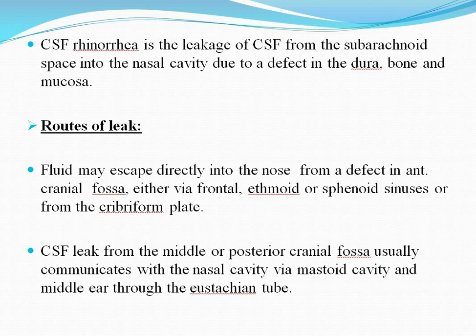Routes of leak: fluid may escape directly into the nose from a defect in the anterior cranial fossa, either via the frontal, ethmoid, or the sphenoid sinuses, or from the cribriform plate. CSF leak from the middle or the posterior cranial fossa usually communicates with the nasal cavity via the mastoid cavity and middle ear through the eustachian tube.